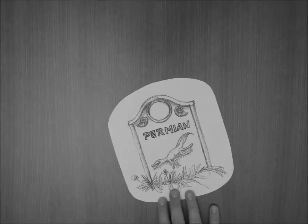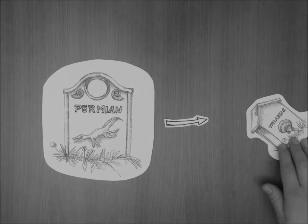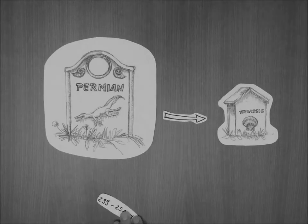But this was nothing compared to what happened 252 million years ago, during the Permian-Triassic mass extinction, also known as the Big Dying.